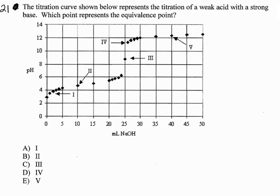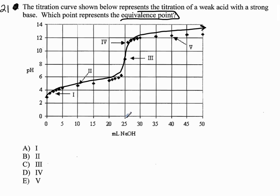Question 21 asks about a weak acid strong base titration. If you look at our curve, it's going to look like this — the curve kind of looks like that. They're asking us about the equivalence point, which is going to be at 25 milliliters, up here. This is our equivalence point. If you notice, the pH at equivalence is around 9. Why?